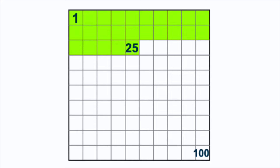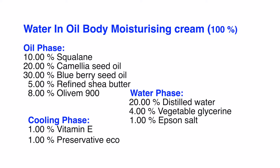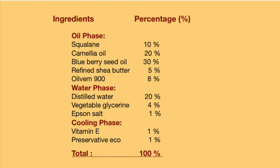Now that we understand the meaning of percentage, the next step is to convert a formula from percentage to grams. The first example is a water-in-oil body moisturizing cream that I created. As you can see, the ingredients are written in percentages. We are going to convert this 100 percent formula to a 75 grams recipe. On the left side of this chart we have the ingredients, and on the right side the percentage of each ingredient.